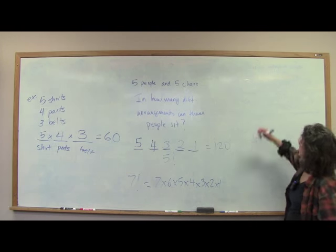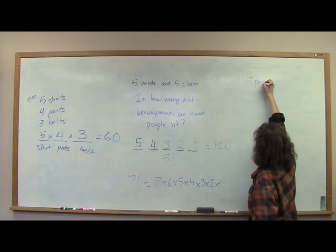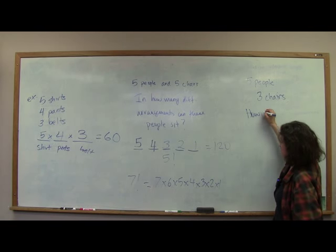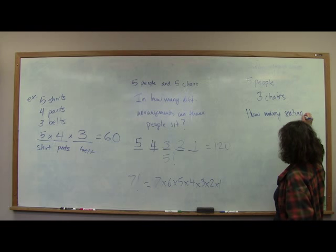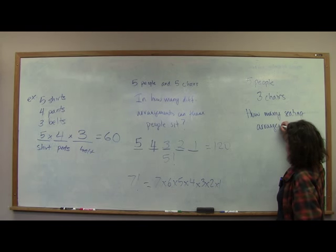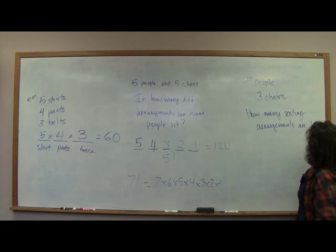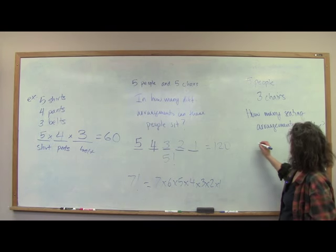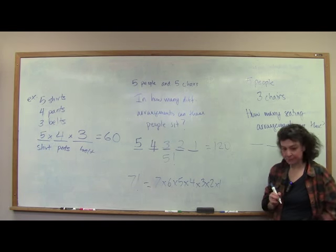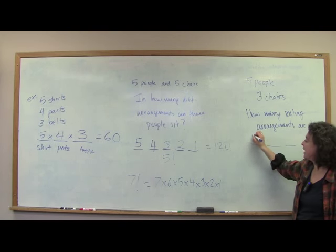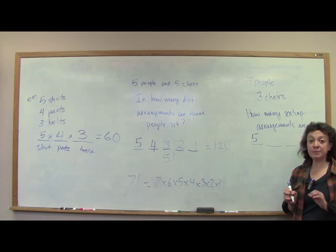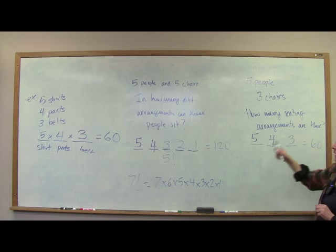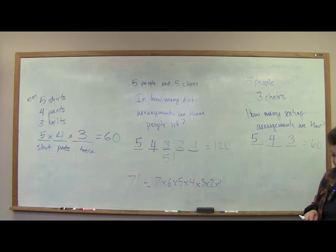Now suppose we have 5 people and only 3 chairs. The other 2 people get to go home. How many possible people could sit in the first chair? Five. One sits down, so 4 could sit next, then 3. So 5 × 4 × 3 = 60 different seating arrangements.